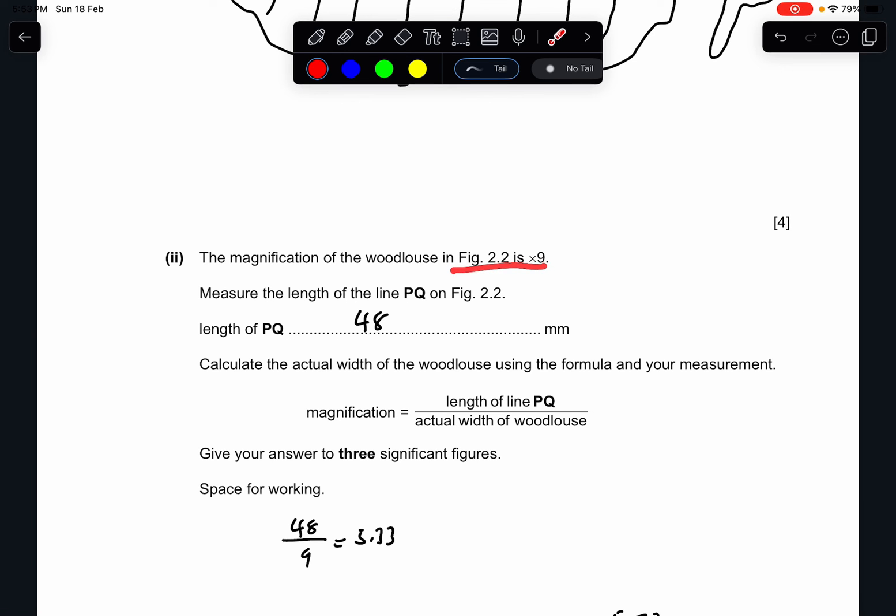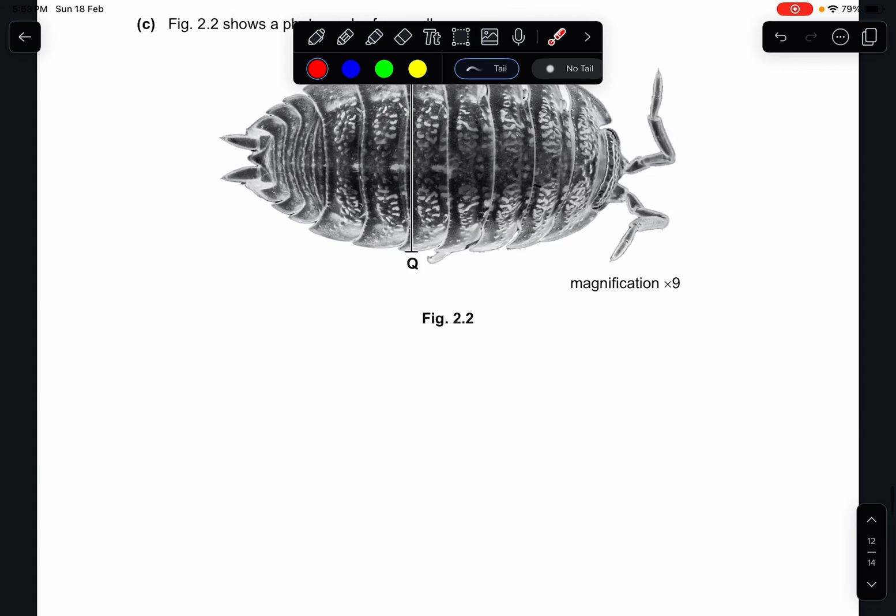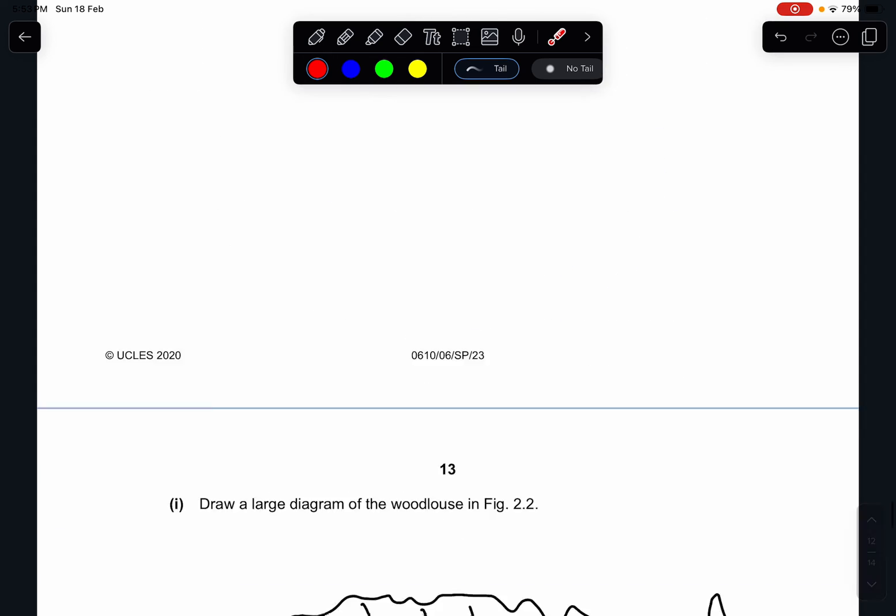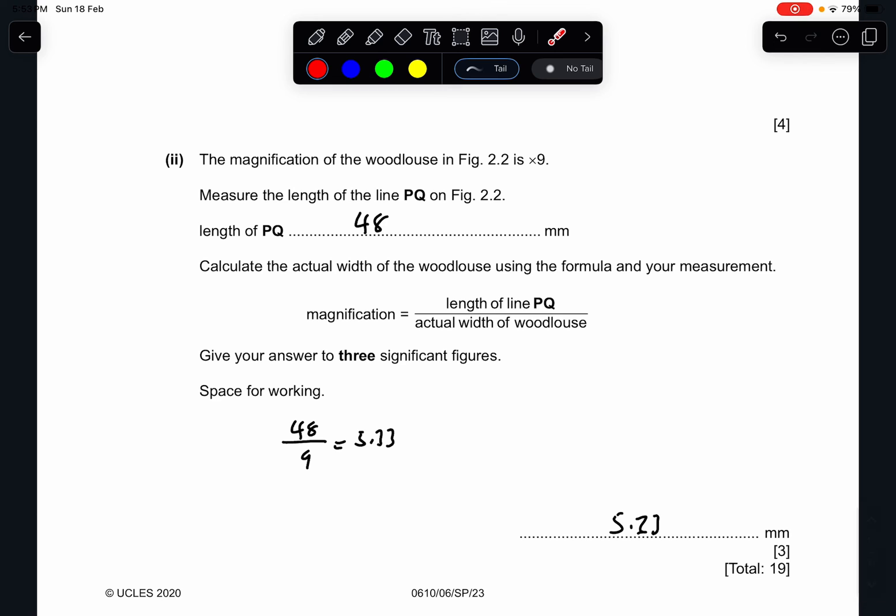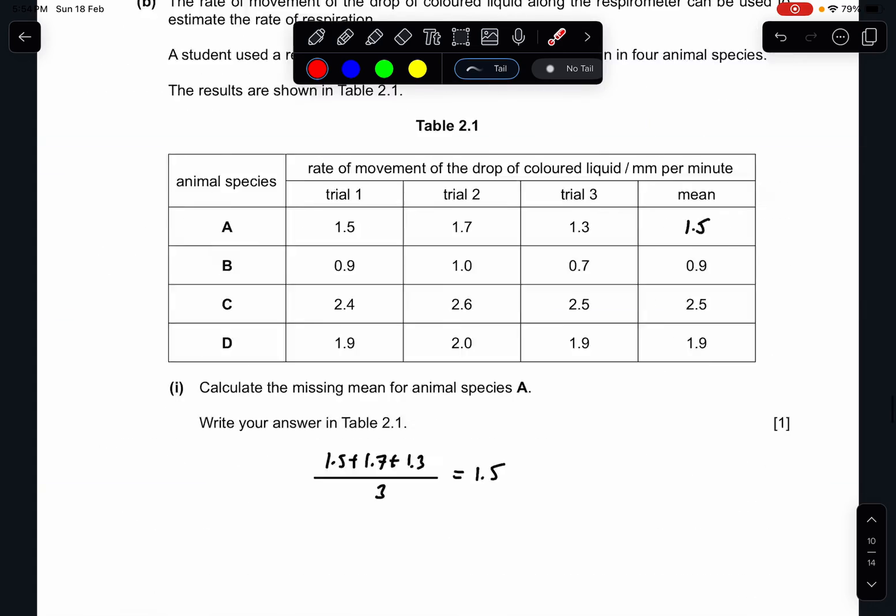Part 2: The magnification of the woodlouse in figure 2.2 is times 9. Measure the length of the line PQ in figure 2.2. Use a ruler to measure. Again, it has a range. I got 48 mm. If your ruler is in centimeters, convert it to mm, times by 10. Then, calculate the actual width of the woodlouse using the formula and your measurement. Give your answer in three significant figures together with working. So I will use I equals M times A. Since I have the length, I don't have the actual length. So what I do is that I take the I divided by M, I get 5.33. Your answer will be 5.33.